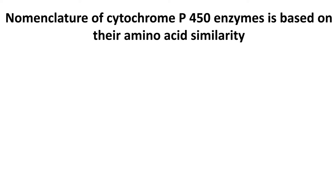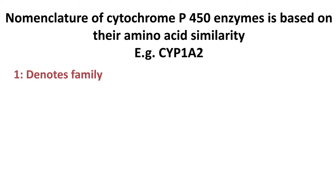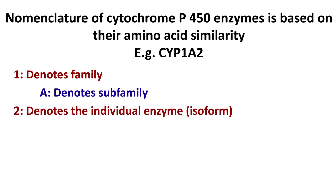Nomenclature of cytochrome P450 enzymes is based on their amino acid similarity. For example, in an enzyme named CYP1A2, '1' denotes family, 'A' denotes subfamily, and '2' denotes individual enzyme.